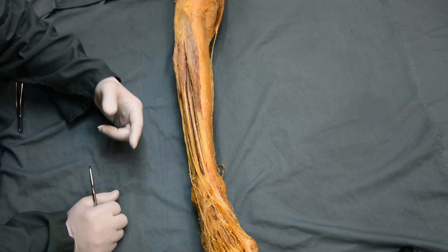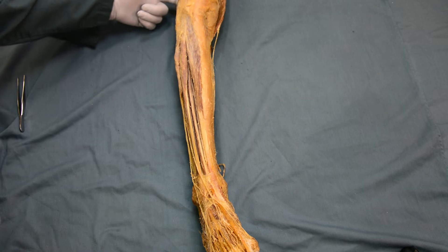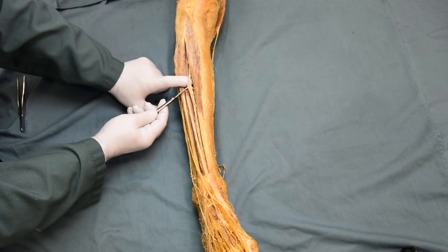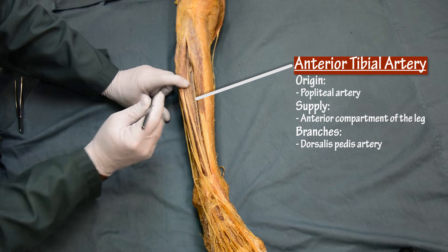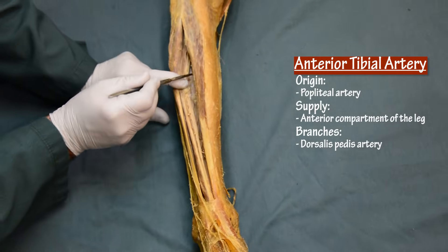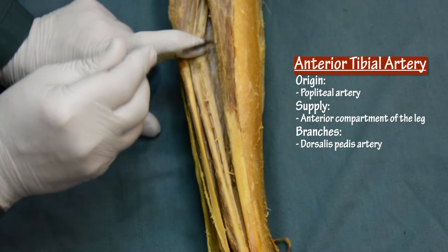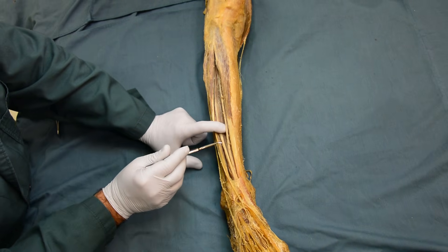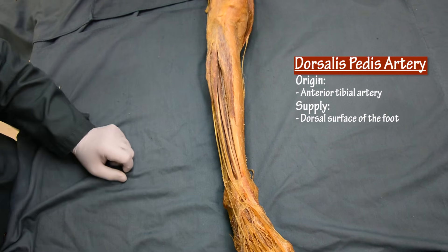For the arterial supply: recall that the popliteal artery in the popliteal fossa divides into the anterior tibial and posterior tibial arteries. The anterior tibial artery is the artery of the anterior leg — it runs between the muscles, anterior to the interosseous membrane. Following the artery all the way down, it goes to the dorsum of the foot where it changes its name to the dorsalis pedis artery.